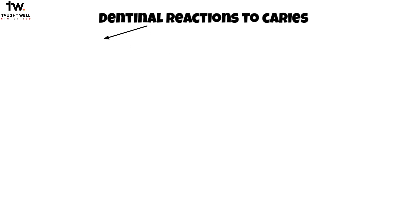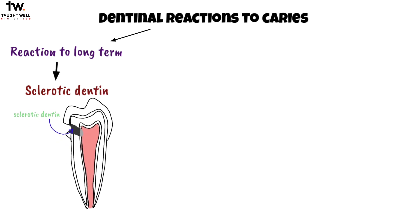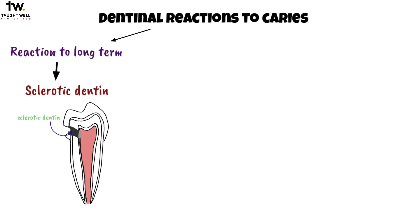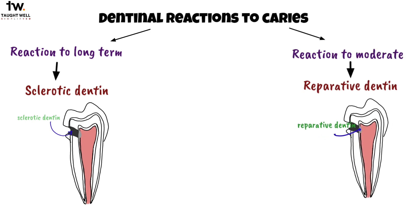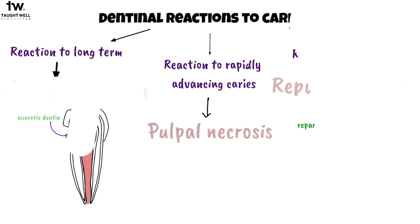Three levels of dentinal reaction to caries can be recognized: reaction to long-term, low-level acid demineralization associated with a slowly advancing lesion — sclerotic dentin; reaction to a moderate-intensity attack — reparative dentin; and reaction to severe, rapidly advancing caries characterized by very high acid levels — pulpal necrosis.